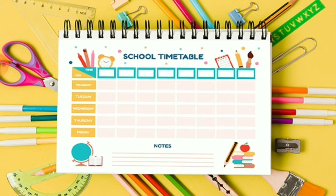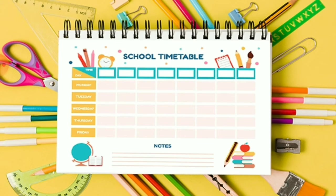Now let us know about timetable. Every class has its own timetable. A timetable tells us about subjects that are to be taught on a particular day. It also tells us about the time or period when a subject will be taught. We need to carry books and notebooks to school according to our timetable. A timetable also tells us about other periods such as games period, music, dance or art and craft period.